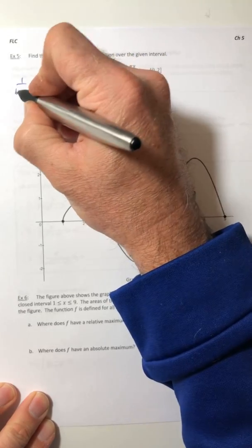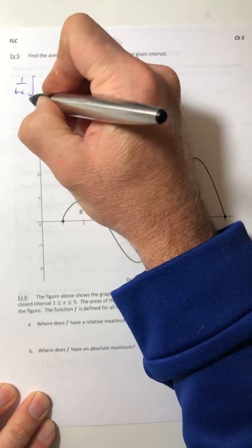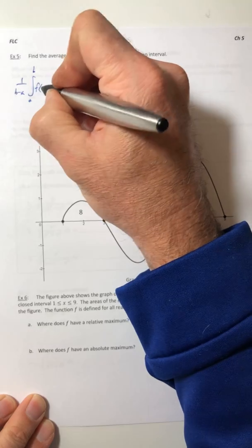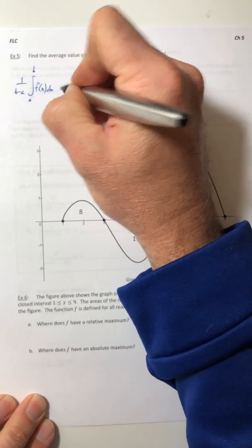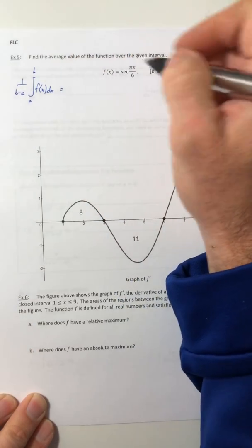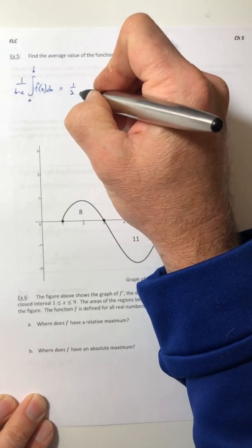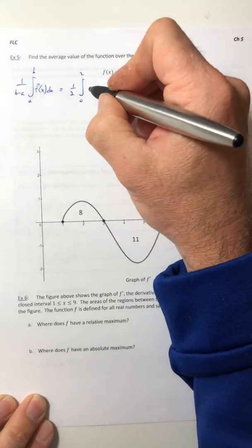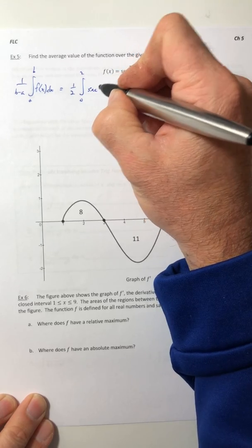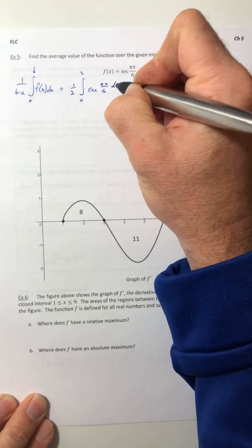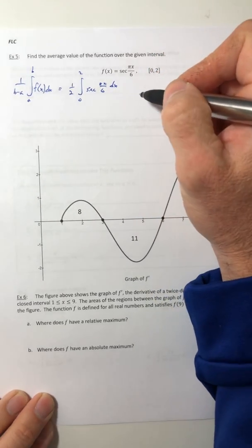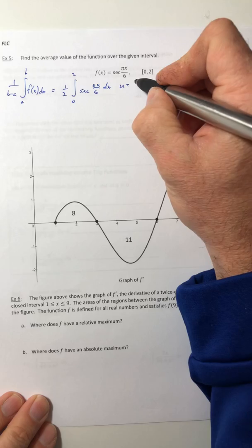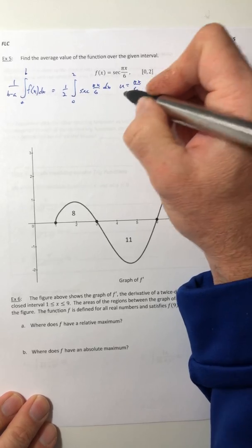First you got to remember the formula: 1 over b minus a times an integral from a to b of your function. So we can fill everything in. On the outside that would be a half, going from 0 to 2 of secant pi x over 6 dx.